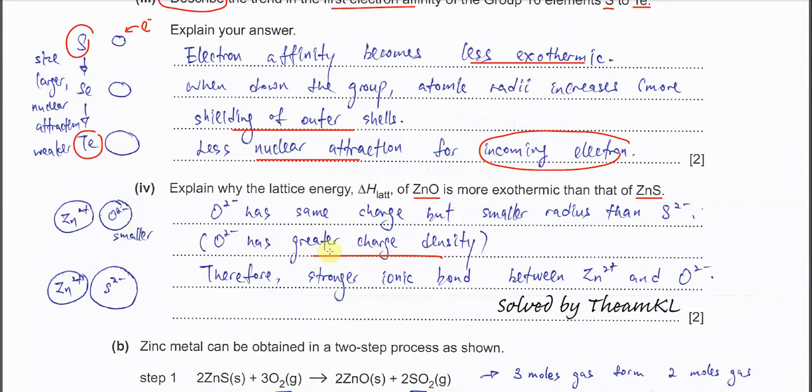You can say that the greater charge density for oxide, or mention the same charge but smaller radius than sulfide. Therefore, a stronger ionic bond forms between the zinc ion and the oxide because the charge density of the oxide is greater. Therefore, attractions between the zinc ion and the oxide is stronger, releasing more energy, or is more exothermic. That's why it's a stronger ionic bond.